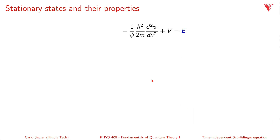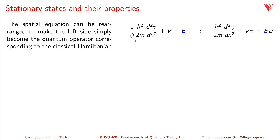Now let's look at the spatial function. It starts as: (1/ψ) times [minus h-bar squared over 2m (d²ψ/dx²) plus V] equals E. Manipulating this, we get minus h-bar squared over 2m (d²ψ/dx²) plus Vψ equals Eψ. This is the time-independent Schrödinger equation, which we'll see a lot.